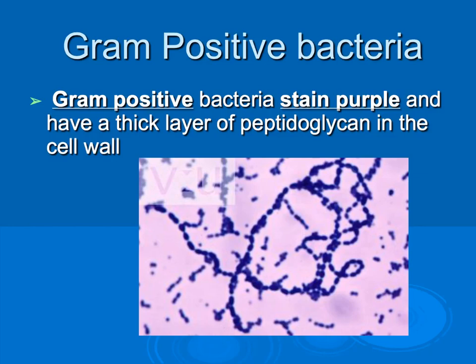Gram stain's purpose is that it is the most commonly used staining mechanism to differentiate bacteria. Gram stain is a differential staining technique. The Gram stain divides most bacteria into two main groups based on the amount of the sugar peptidoglycan present in the bacterial cells. This is a Gram positive bacterium and we know that because it stains purple — it stains purple because it has a thick layer of peptidoglycan in its cell wall.